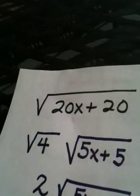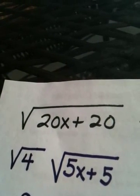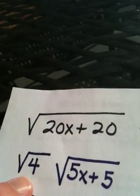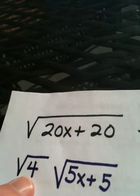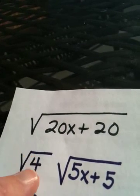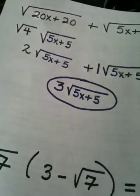So the whole key to that problem was right here. Knowing to start that part of the problem off by pulling out a 4, and the reason I took out a 4, I factored out a 4, was because 4 is a perfect square.